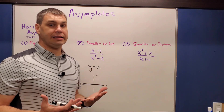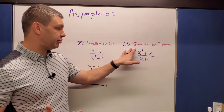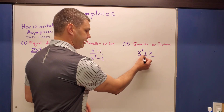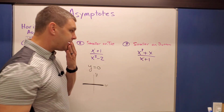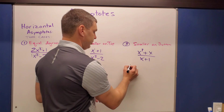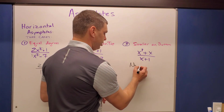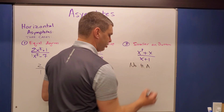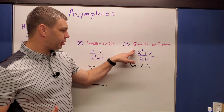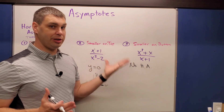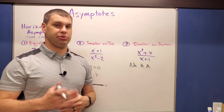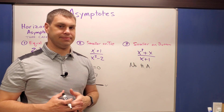The last case is when the smaller degree is on the bottom — meaning the numerator has a larger degree. When this happens, there is no horizontal asymptote. However, when the larger degree is on top, we do have to look for what's called a slant asymptote, which we'll cover next.